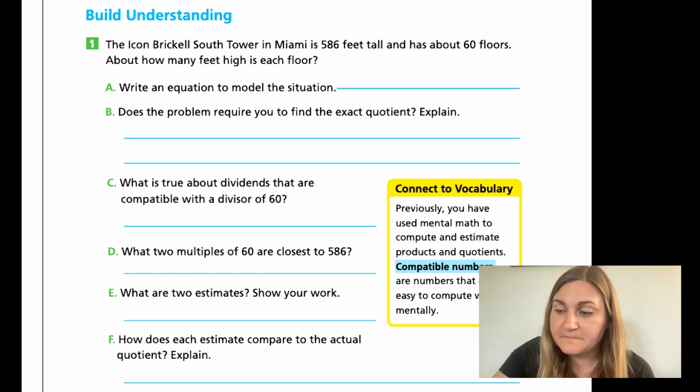So A says, write an equation to model the situation. B, does the problem require you to find the exact quotient? And C, what is true about dividends that are compatible with a divisor of 60? Go ahead and pause and do those three.